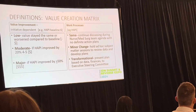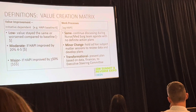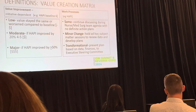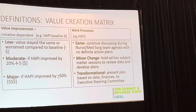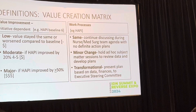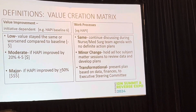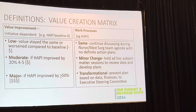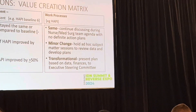A minor change in your work processes means holding ad hoc subject matter sessions, reviewing the data, and developing plans together — you've heard that today. Transformational in your work processes means presenting the plan based on data and finances, whether it's an executive steering committee for value analysis or an all-organizational approach. You can sell it by knowing what's really going on using that data.